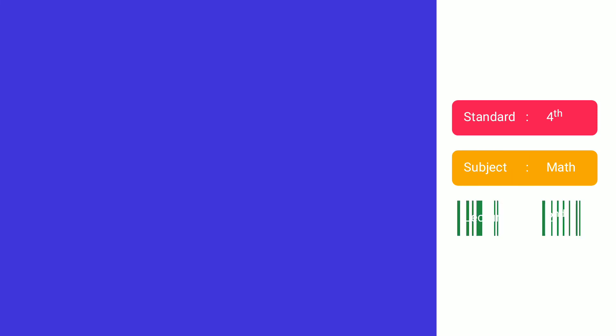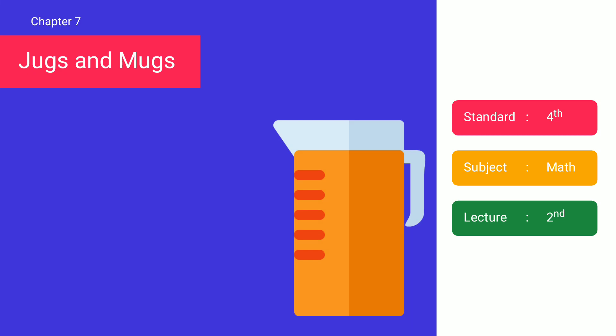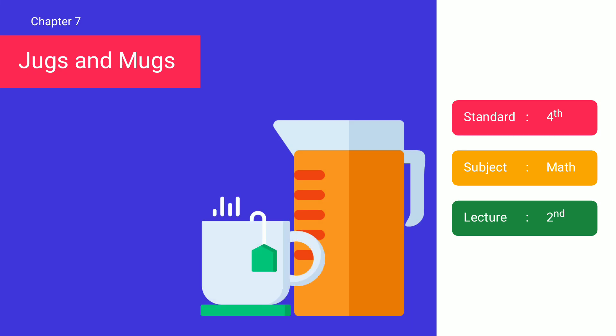Hello everyone, good morning all of you. Welcome to today's second online session of chapter number 7. The name of our chapter is Jerks and Mugs. Today we are going to study some story sums from your textbook.